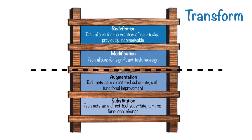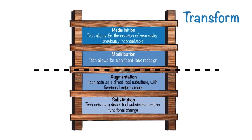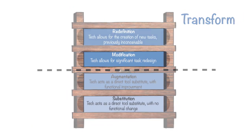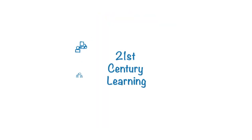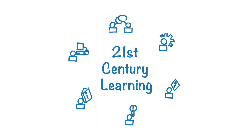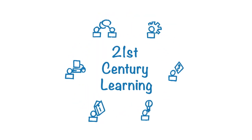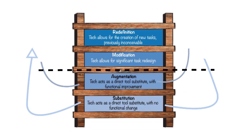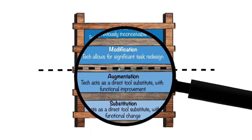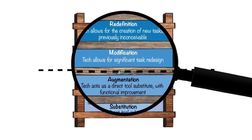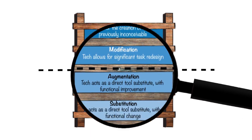Transforming learning promotes higher-order thinking skills, such as analyzing, evaluating, and creating, which are essential to common core state standards and 21st century learning. So how can you teach above the line? Let's take a look at an example of a classroom task and how it evolves through the lens of SAMR.